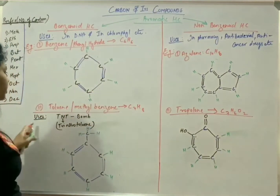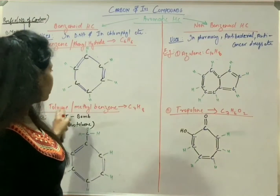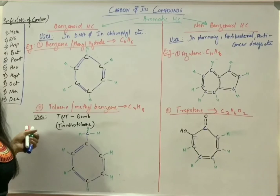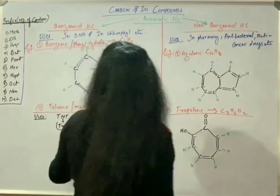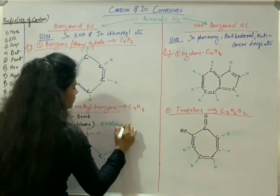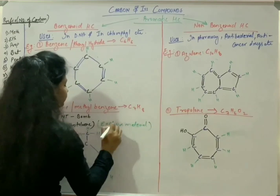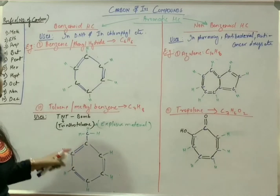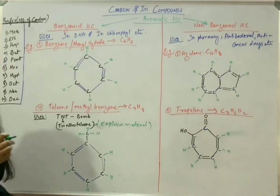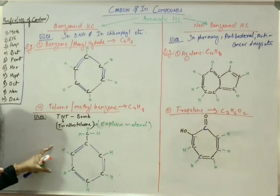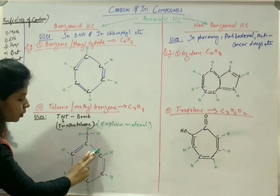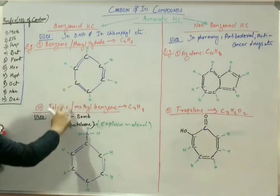The next example is toluene, with the formula C7H8. The other name is methyl benzene. The use of toluene: TNT — trinitrotoluene — is an explosive material derived from it. In the structure of toluene, there is one benzene ring with alternating double and single bonds, satisfying the benzenoid definition that at least one benzene ring is required in its chemical structure.